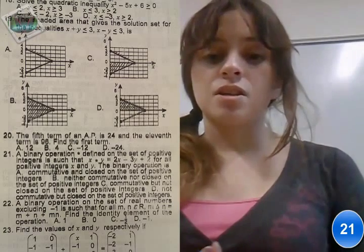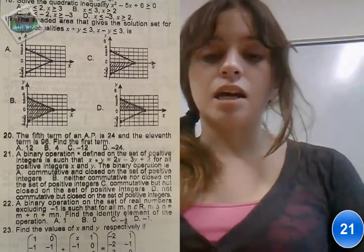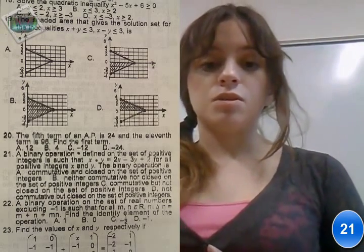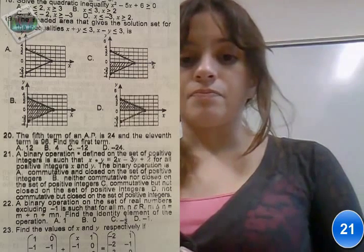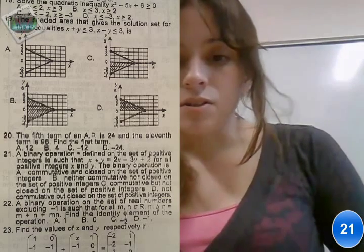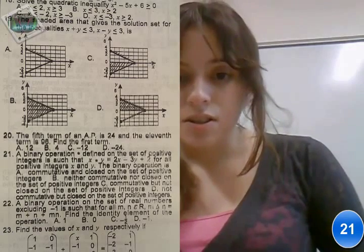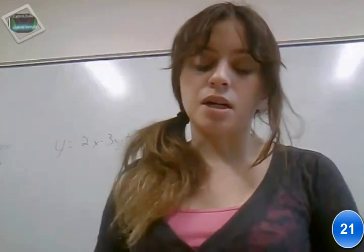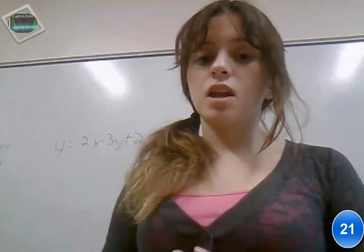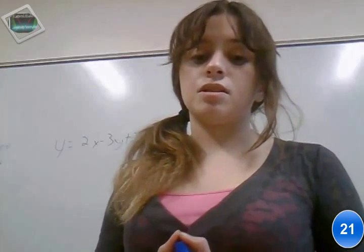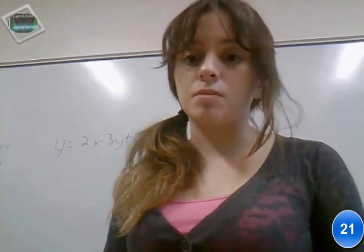And then it gives you some options. Is it commutative and closed, not commutative and closed, not commutative but closed on the set of positive integers, or commutative but not closed on the set of positive integers. And so essentially what you have to know is commutative and closed to be able to solve this.